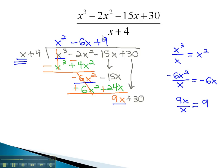Again, we will multiply the 9 by each of the terms. As we do, we get 9x plus 36.